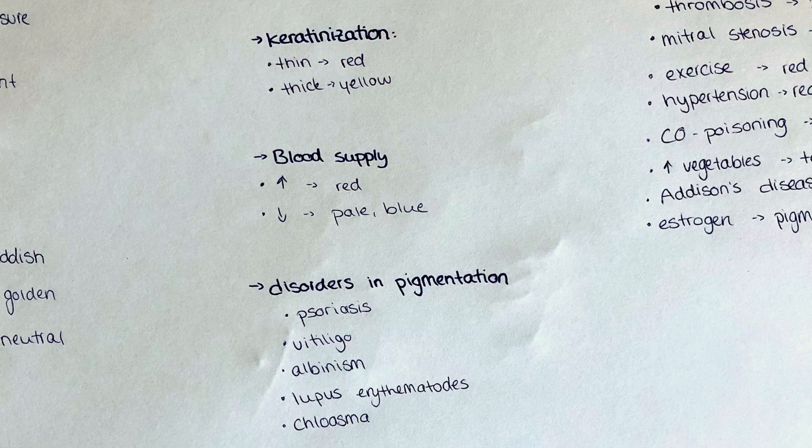Also, the thickness of the carotinized skin layer changes the appearance of the skin. A thin layer, as in for example the lips, will make the skin appear more red, while a thick layer will lead to a more yellow appearance of the skin, as perhaps in the palms of the hands or the sole of the feet.